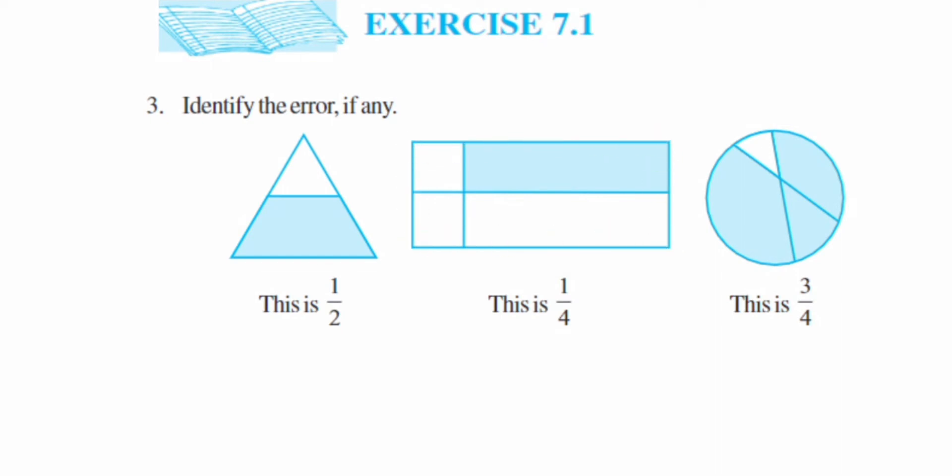Second, in the rectangle, they have made four parts. But you can see here, these two parts are equal, these two are equal, but all four parts are not equal.